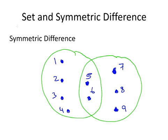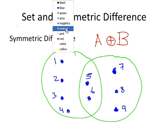Now let's look at the symmetric difference of A and B, and we would write that as follows: A circle-plus B. And what area of the Venn diagram corresponds to that?